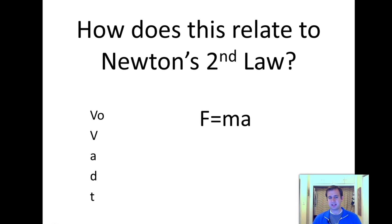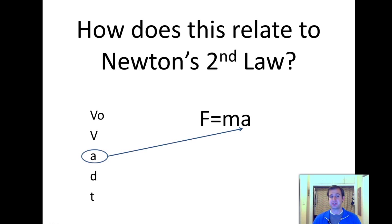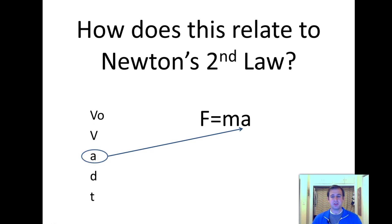If I write down V0, V, A, D, T and F = MA, you'll notice there's only one thing they have in common: acceleration. The V0, V, A, D, T does not include force and mass, and F = MA doesn't involve anything else except A. So the key is, when dealing with Newton's Second Law and kinematics, the first thing we need to find is acceleration so we can plug it into the other equation.